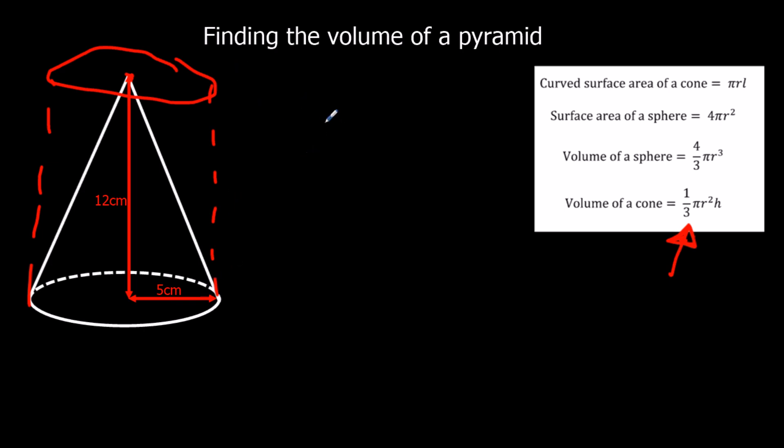So if I was going to do the cylinder, we'd do pi times the radius squared times the height. So pi times five squared times 12, 300 pi.